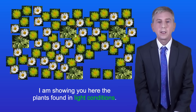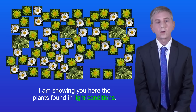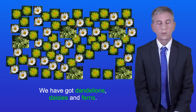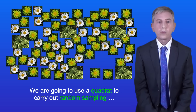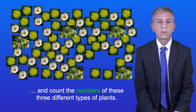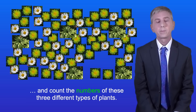I'm showing you here the plants found in light conditions. We've got dandelions, daisies and ferns. So we're going to use a quadrat to carry out random sampling and count the numbers of these three different types of plants.